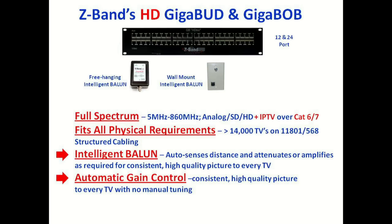This is all made possible by our automatic gain control technology that alleviates the need for any manual tuning, because all of the signal conditioning and amplification is done internally from video hub to intelligent balun, and from the master video hub to all of the satellite video hubs. The only setting needed is the input level into the master video hub. If you can give us 23 dBmV flat for analog or 17–20 dBmV flat for digital, we guarantee the highest quality video up to 1080p at every TV.